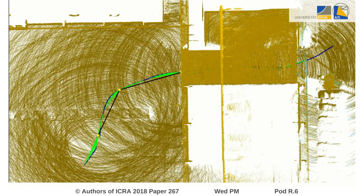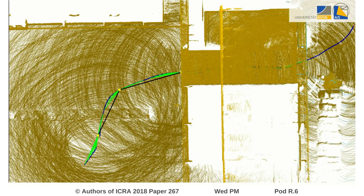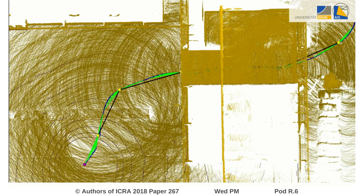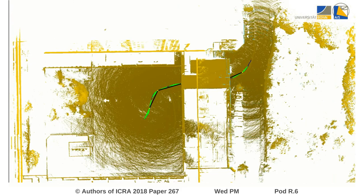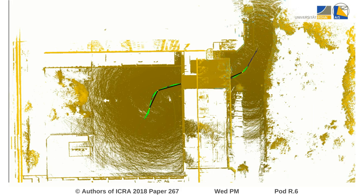During operation, we iteratively refine subgraphs in parallel, depending on the available resources. Global optimization of the full graph is only performed when the local optimization has changed a subgraph significantly, or a loop closure constraint was added. Similarly, if global optimization was triggered by loop closure, subgraphs are refined when the corresponding map node changes.